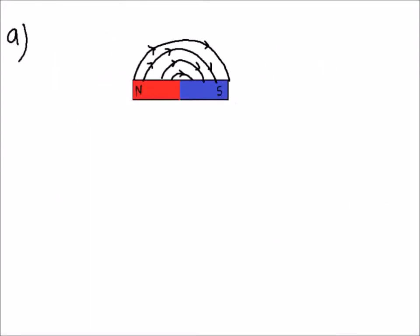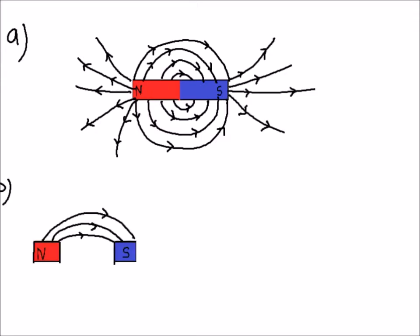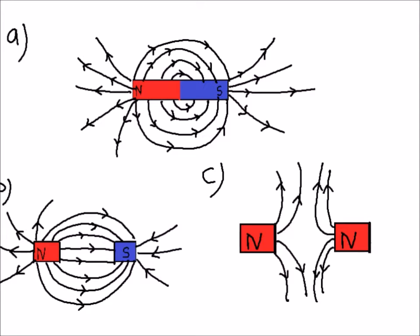Every magnet has a magnetic field around it. This is the space around a magnet in which the magnet can attract other magnetic materials. Magnetic field can be imagined as a series of lines of magnetic force. These lines extend from the North to South Pole of the magnet.